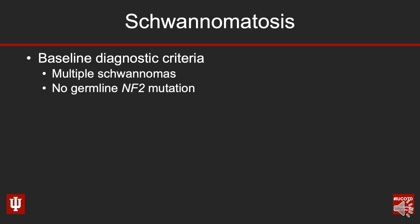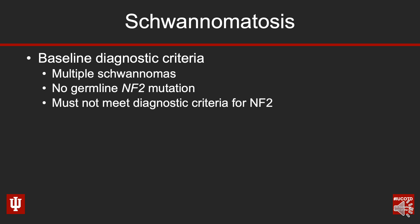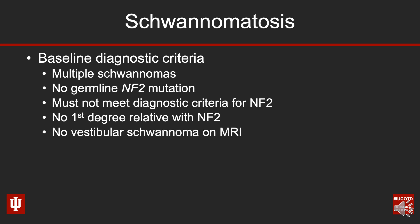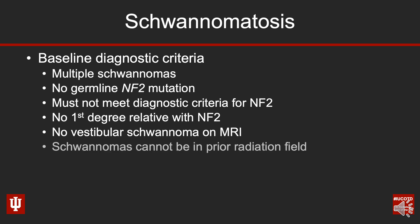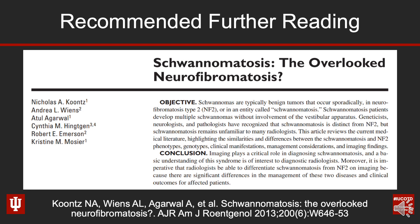There are baseline diagnostic criteria: you need multiple schwannomas; you cannot have a germline NF2 mutation; you can't meet any diagnostic criteria for NF2; you can't have a first-degree family member with NF2; and you cannot have a vestibular schwannoma on MRI. Additionally, these schwannomas cannot be in a prior radiation field, because radiation-induced schwannomas would not reflect this genetic mutation responsible for schwannomatosis.